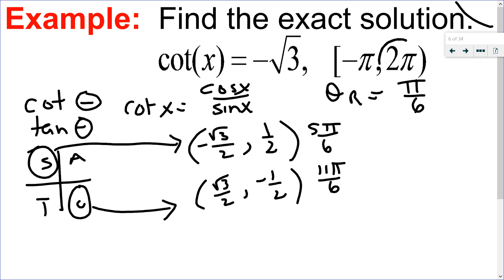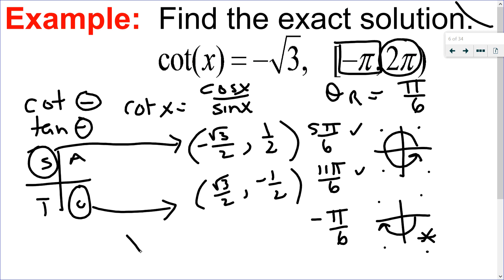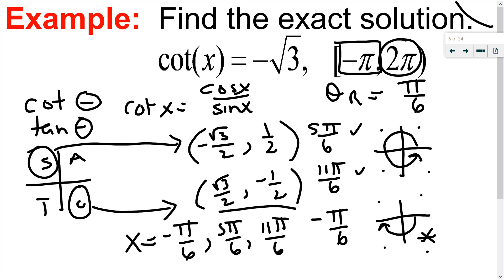I've got my solutions up to 2π, but the domain could also go from -π to 2π. The 2π solutions we already have. For negative π — that's a half turn in the negative direction — there's a solution in quadrant 4 at the negative reference angle. Going clockwise, that solution is simply -π/6. So putting them all in order, my solutions are: -π/6, 5π/6, and 11π/6.